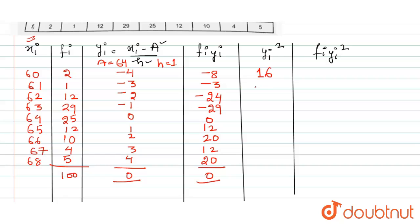Next, for the calculation of standard deviation, I need to square the value of yi. That is 16, 9, 4, 1, 0, 1, 4, 9, 16. So next, multiply yi square with fi. So I will be getting 32, 9, 48, 29, 0, 12, 40, 36, 80. So we need to find the sum of this, that is fi yi square summation, that will be equal to 286.